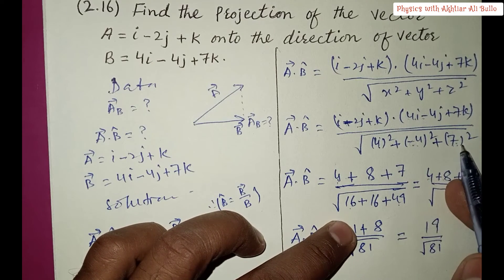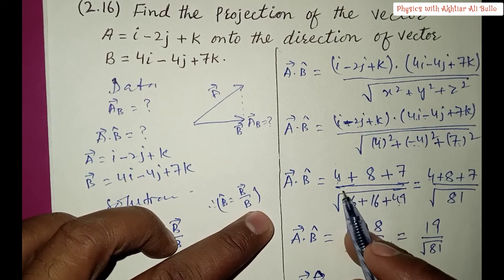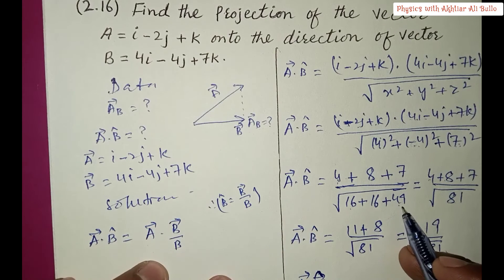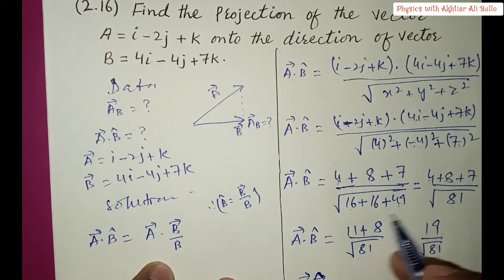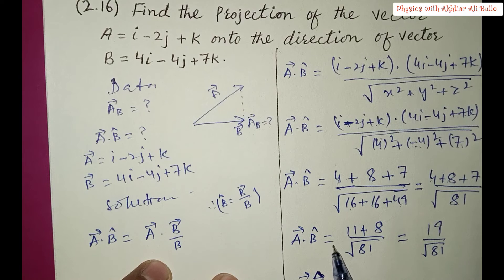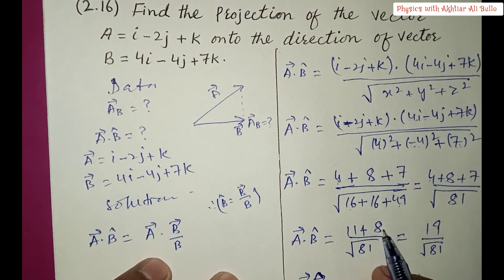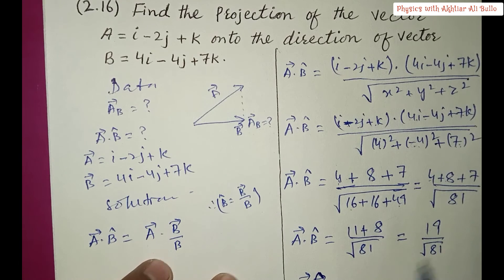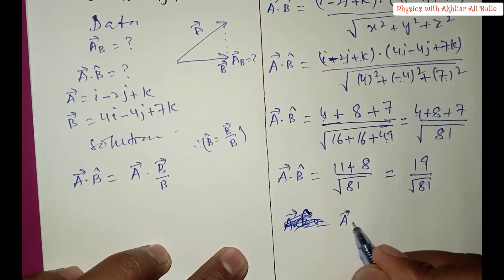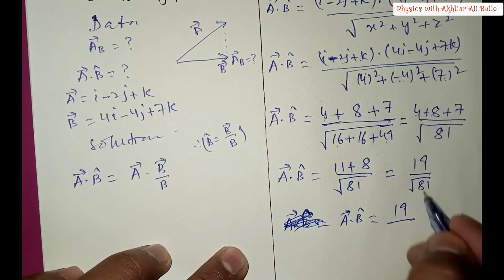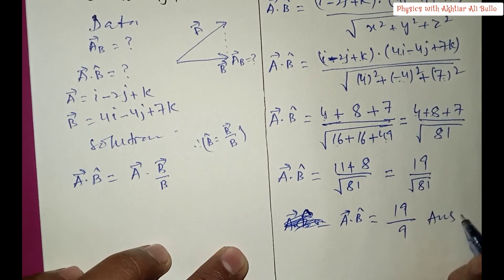The denominator is the square root of 16 + 16 + 49, which equals the square root of 81. The numerator is 4 + 8 + 7 = 19. So the projection of vector a onto the direction of vector b equals 19 divided by the square root of 81, which is 19/9. This is our required answer.